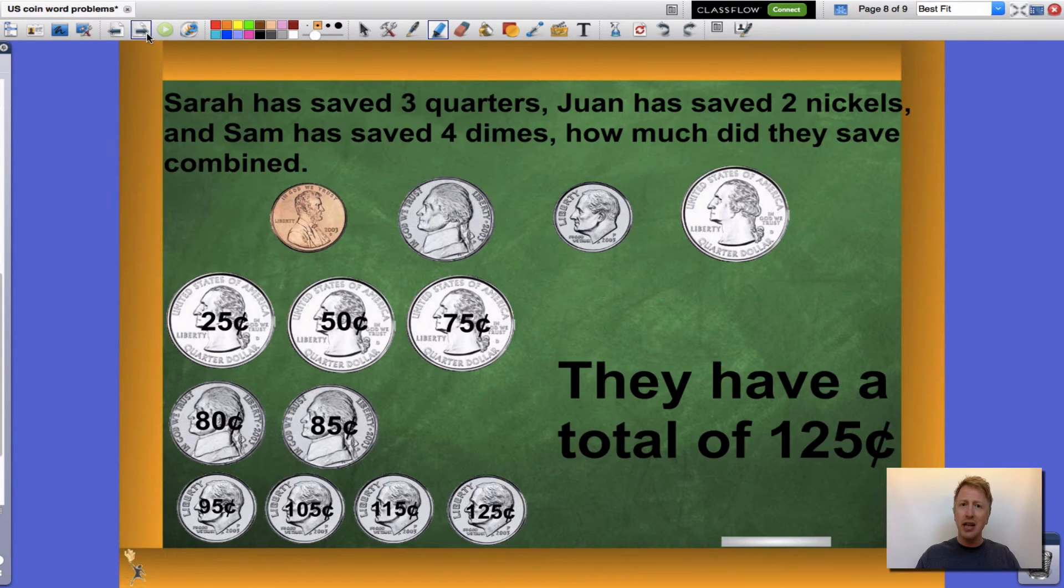What does that look like? Take a look. If Sarah has three quarters at twenty-five cents each, I have twenty-five, fifty, and seventy-five cents. If I add that to Juan's two nickels, I have eighty cents, eighty-five cents. And if I add that to Sam's four dimes, I have ninety-five cents, a hundred and five cents, a hundred and fifteen cents, a hundred and twenty-five cents. That's a lot of money. We can also say that by one dollar and twenty-five cents. All together, they have a total of a hundred and twenty-five cents.